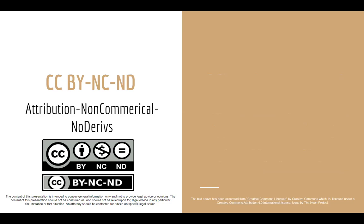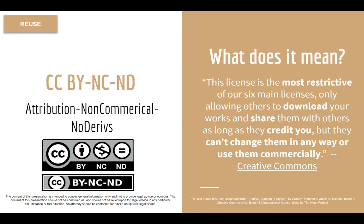The final and most restrictive Creative Commons license is CC BY-NC-ND, or Attribution NonCommercial NoDerivatives. You can still reuse, retain, and redistribute the item, but only for non-commercial purposes and only in its original form — the material cannot be revised or remixed without permission. In the music lesson scenario, if that handout on the circle of fifths had a CC BY-NC-ND license, you could make copies and distribute it as-is only to students in your college course. To distribute it to private lesson students you would need to ask the copyright holder for permission, and if you wanted to modify it, you'd also need permission.